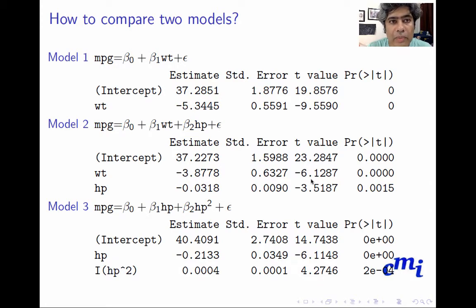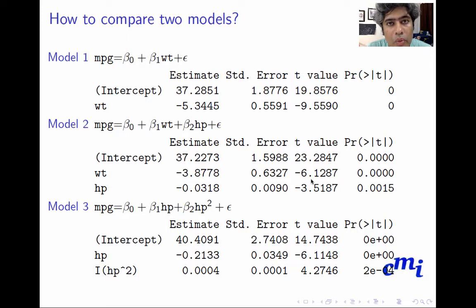Let's consider three models. How do we choose one among them? If I have to compare Model 1 and Model 2, or Model 2 and Model 3, or Model 1 and Model 3, or all three together, how do I make that comparison and judgment?